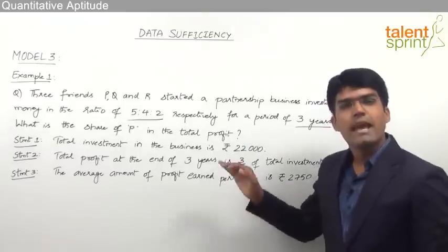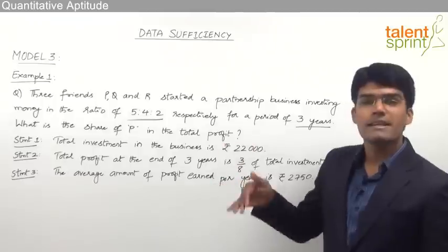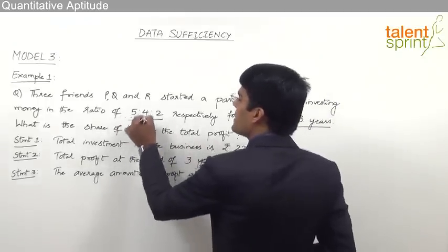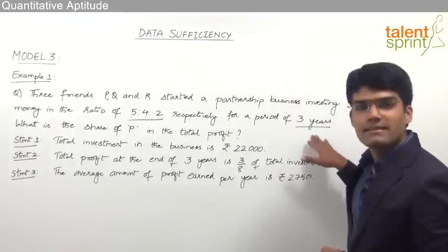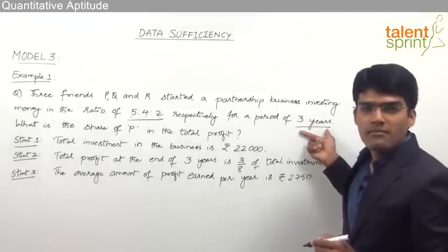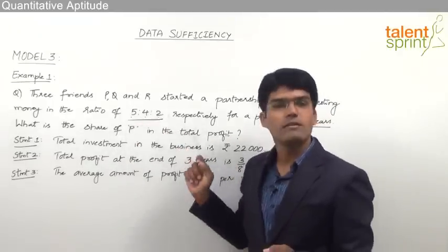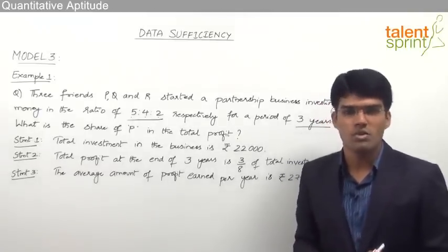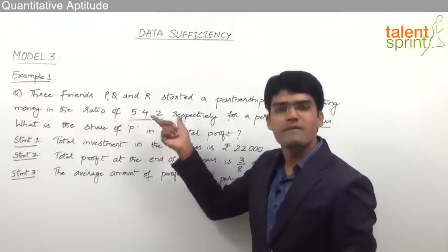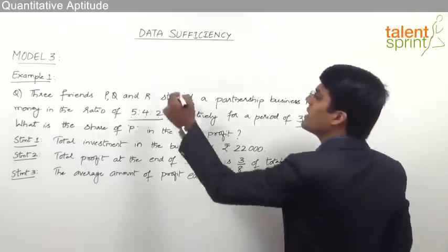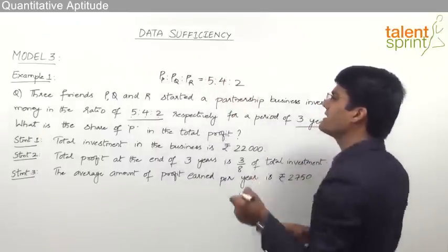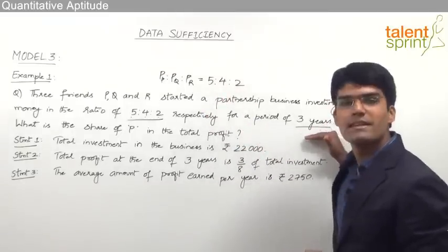We need to find which statements help us answer the question, then the remaining ones are redundant. Since all three friends invested for the same 3-year period, the profit ratio equals the investment ratio — 5:4:2. Profit is generally divided based on investment multiplied by time, but since time is the same for each person, the profit of P:Q:R is in the ratio 5:4:2.